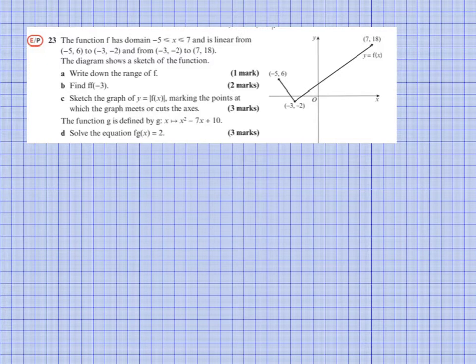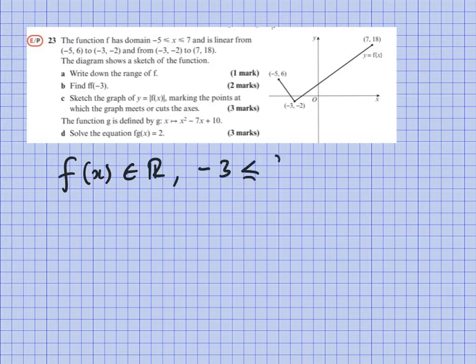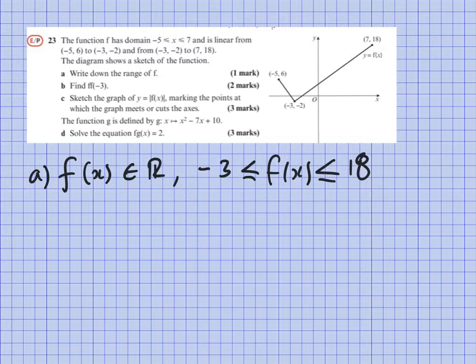Part a asks to find the range of f. So f(x) firstly has to be a real number, secondly it's between -3 and 18. Looking at those, you've got black filled in dots, so it can exist at both of those levels. That's why I've done less than and equals to, rather than strictly less than.